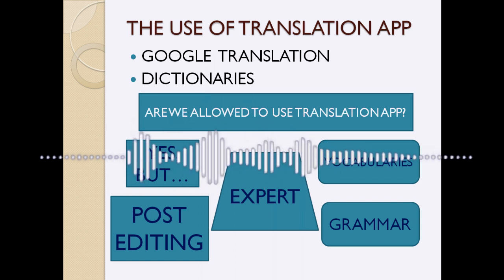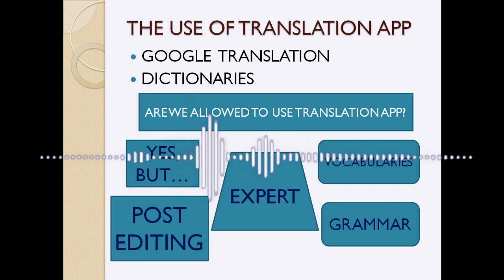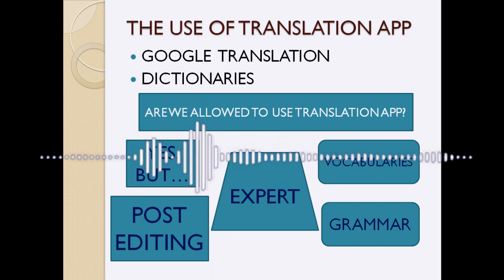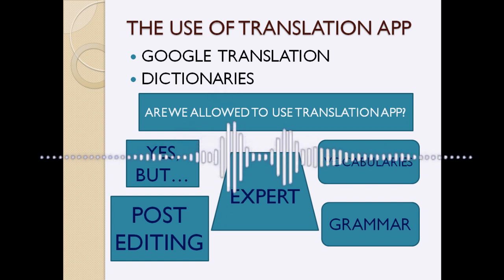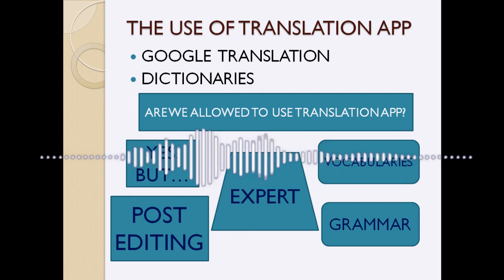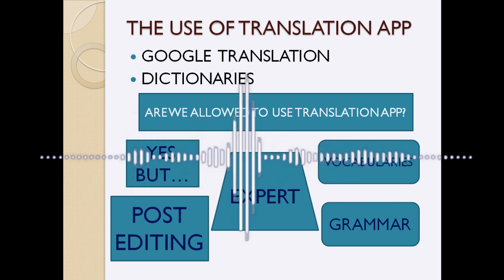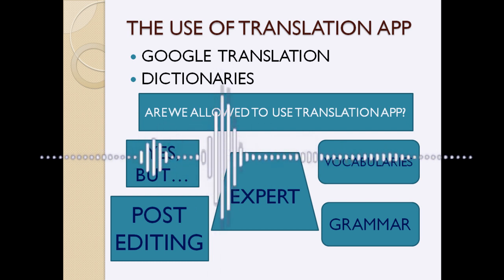Post-editing is the final process you need to go through, and I suggest you use manual post-editing, because you need your brain, your knowledge, your ability, your capability, and your skill to determine whether the translation is right or wrong. You can use translation apps at the word processing stage. You can also use grammar apps for grammar correction, but for post-editing, please use your own skill.